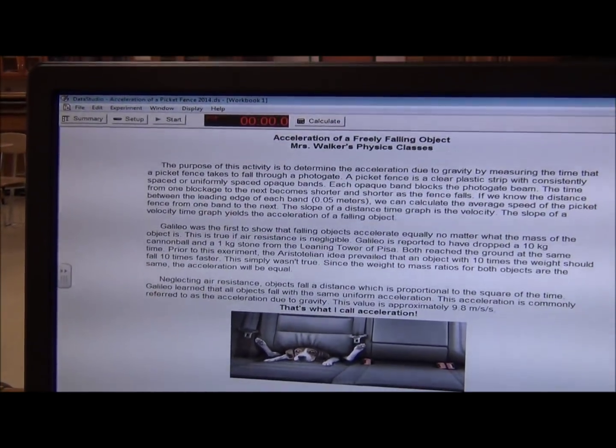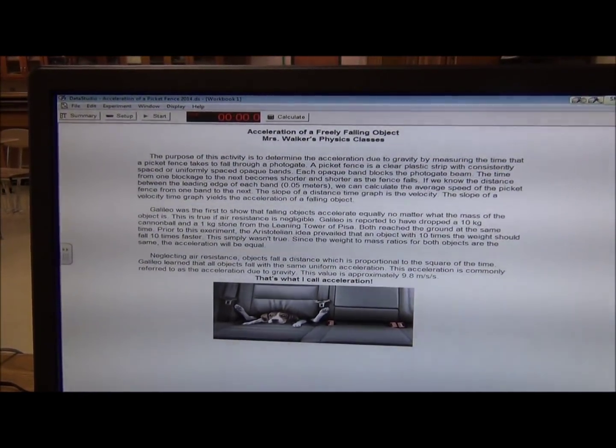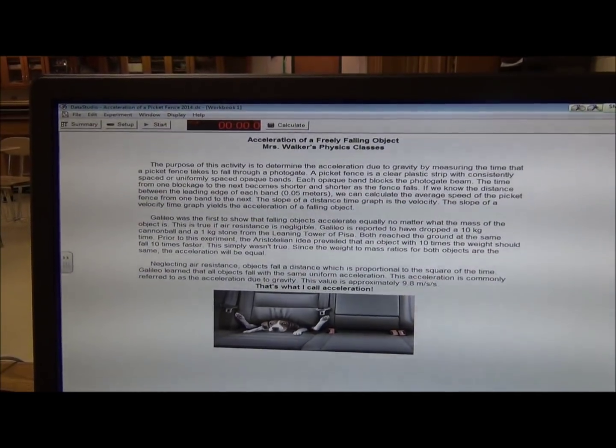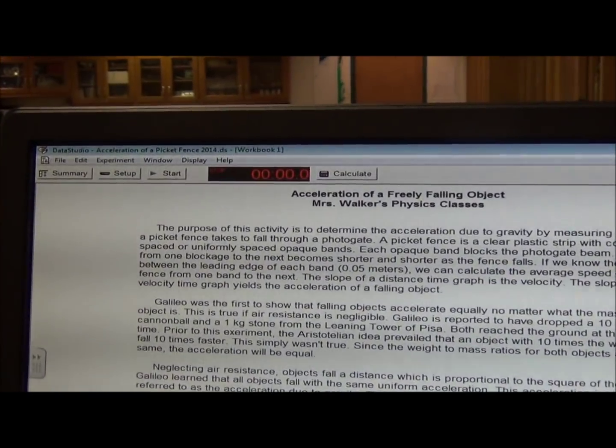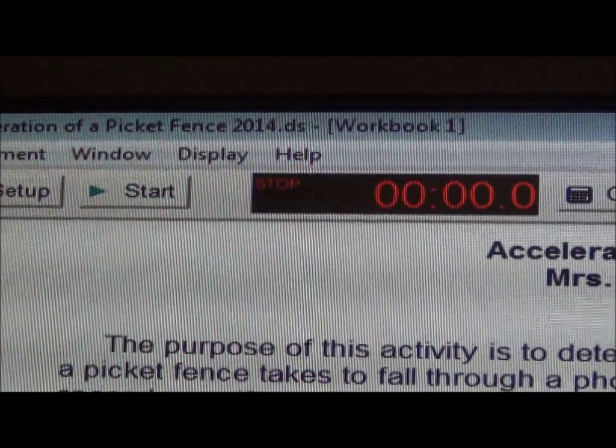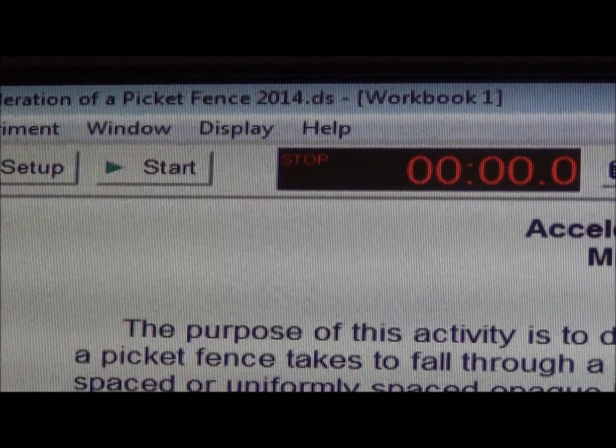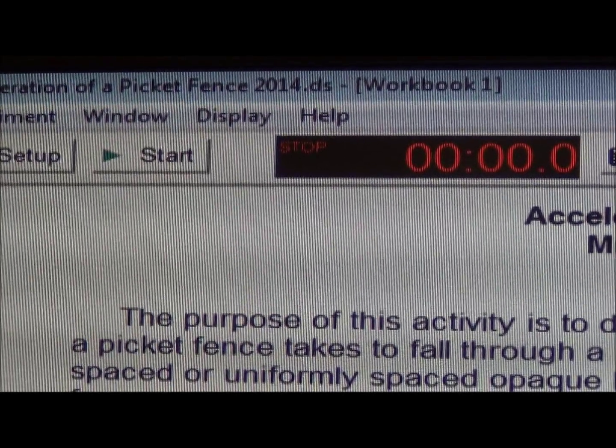Looking at the computer screen, focus at the top of your screen when in the Data Studio program. Look at the Start button, which is next to the stopwatch or timer. There should be a green triangle. If this green triangle is not illuminated, you need to check your connections again.